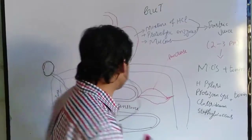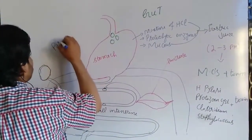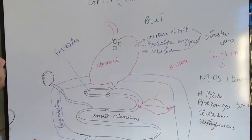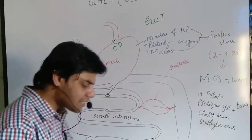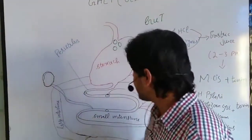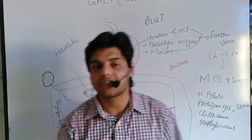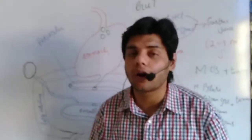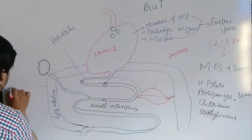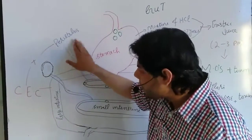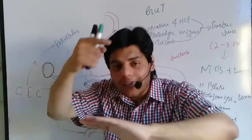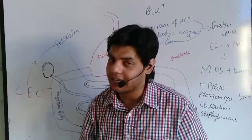Moreover, the intestine also contains peristalsis. These are muscular layers which cover the small and large intestine. Additionally, the small and large intestine contain cells which we call columnar epithelial cells. When the muscular layer and these cells are combined together, they can separate or remove the microorganisms from the intestine.